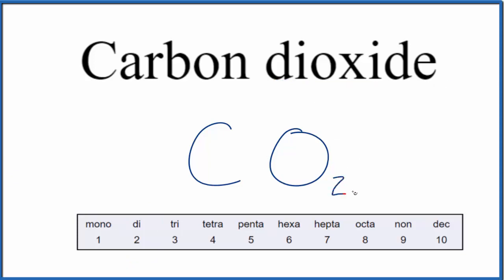So the formula for carbon dioxide is CO2. The elements carbon and oxygen. We have one carbon, we don't write the one by convention, and then we have two oxygen atoms. That gives us CO2, carbon dioxide.